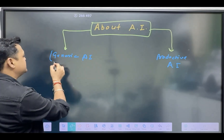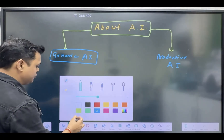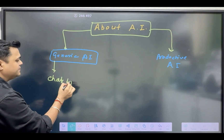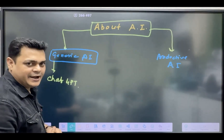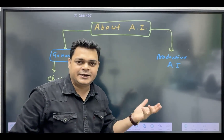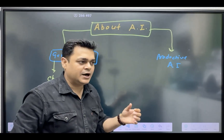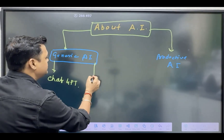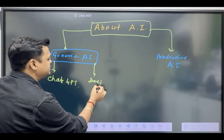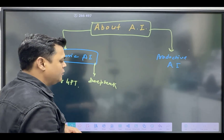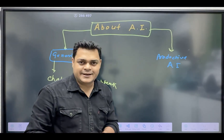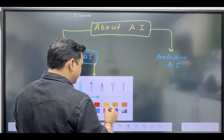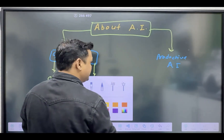Examples of Generic AI include ChatGPT — a very popular AI platform that we use to generate images, create videos, or write emails. Another example is DeepSeek, which is also a kind of Generic AI.